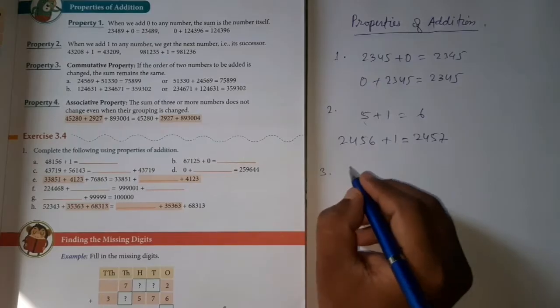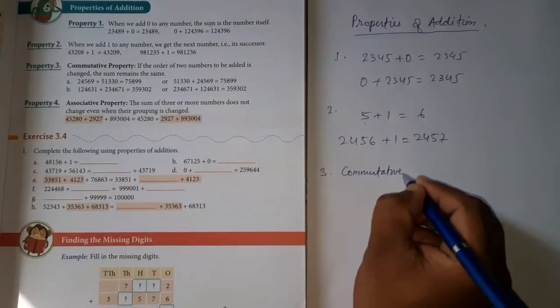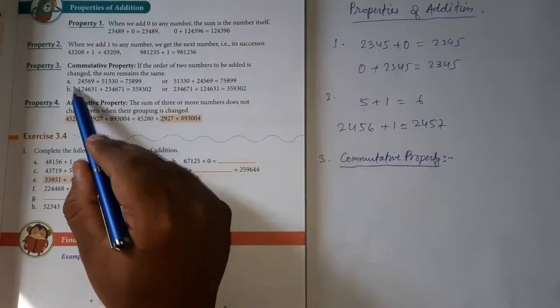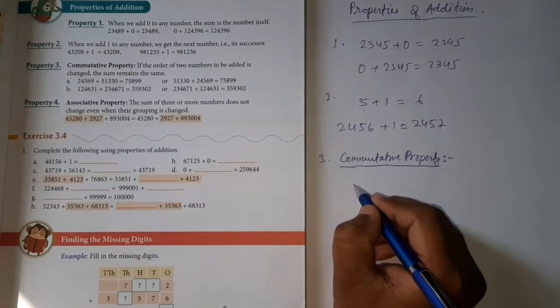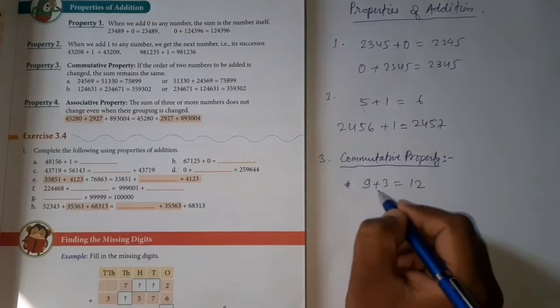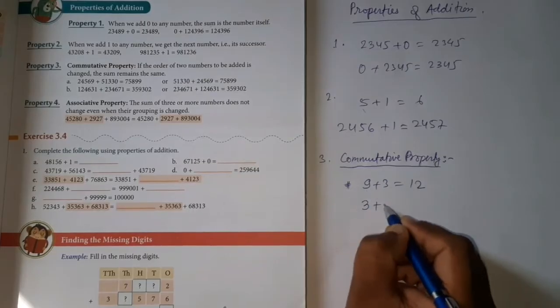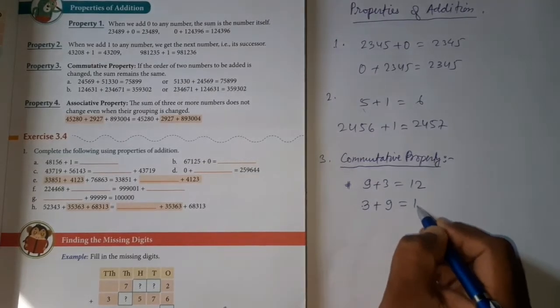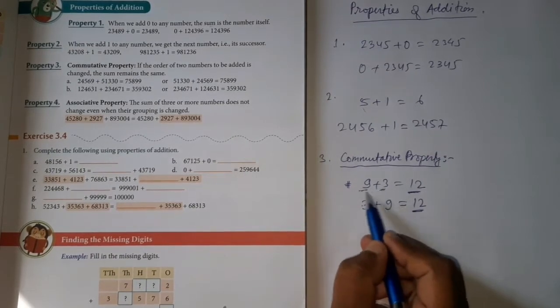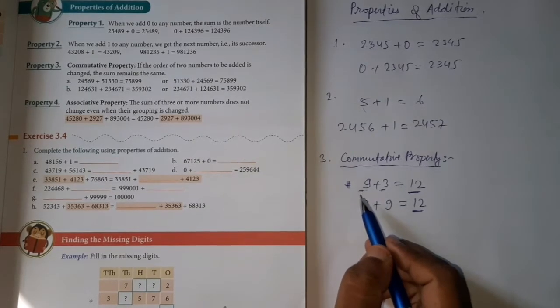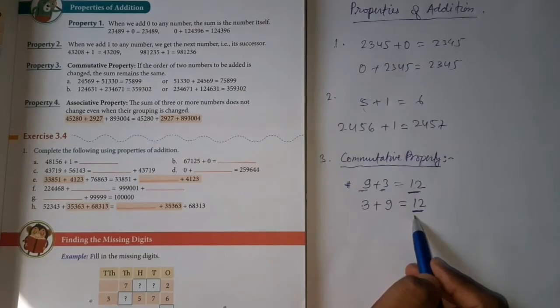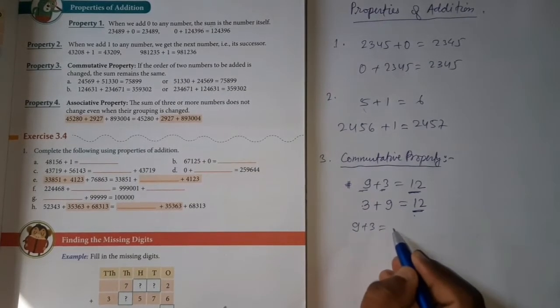Next property you have is property three. This is known as the commutative property. According to commutative property, if the order of two numbers to be added is changed, means what? For example, if you add nine plus three, it gives you 12. Now change the order. First write three, then write nine. What do you get? 12. So these two answers are equal.